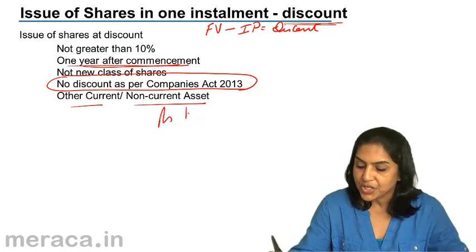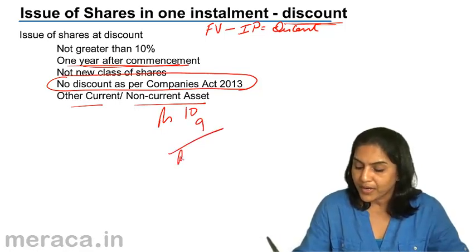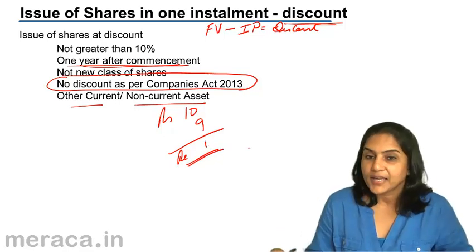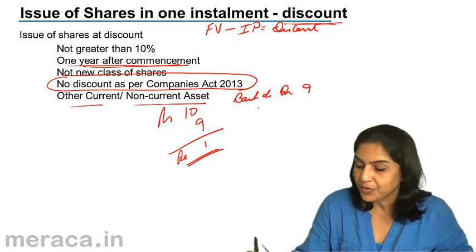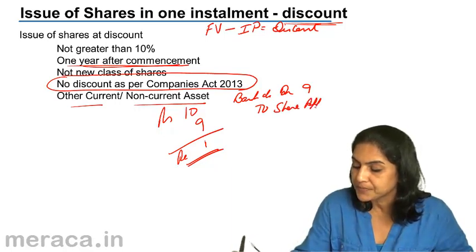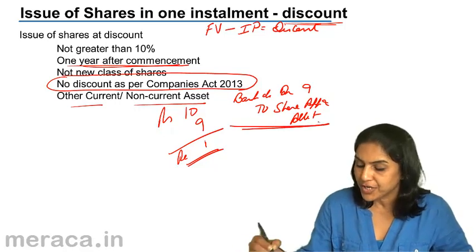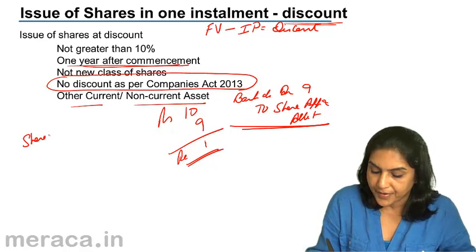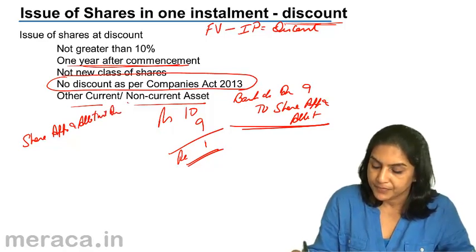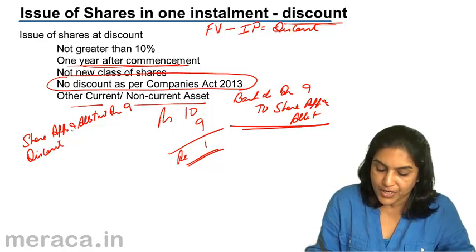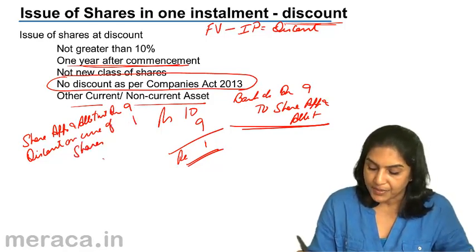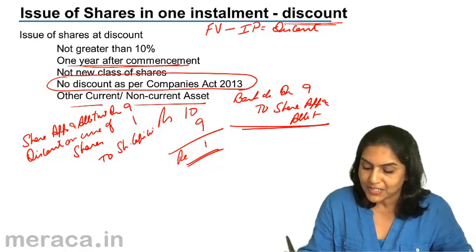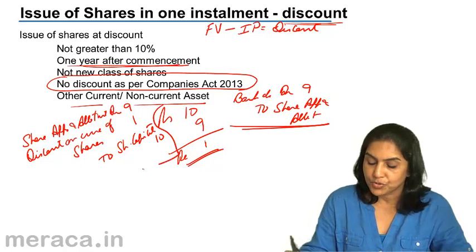So if a rupees 10 share is being issued for rupees 9, then rupee 1 is the discount. The accounting entry would be: bank account debit — we get only 9 rupees — to share application and allotment. On allotment of shares, share application and allotment is debited at 9. Discount on issue of shares is debited at 1 — this is a capital loss. Share capital is credited at face value, rupees 10.